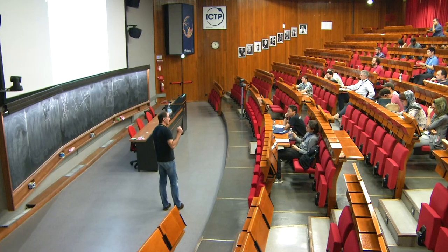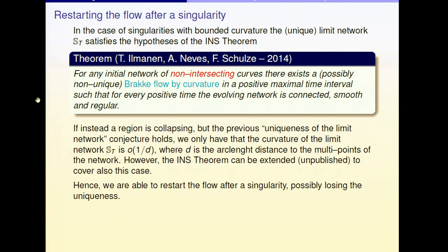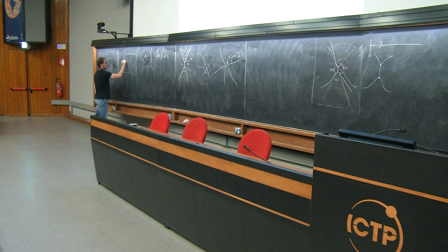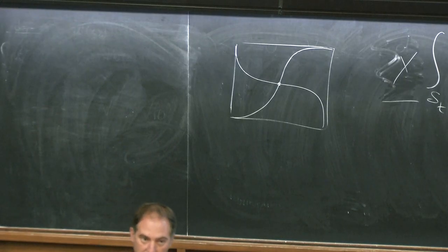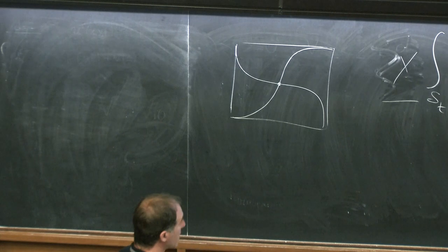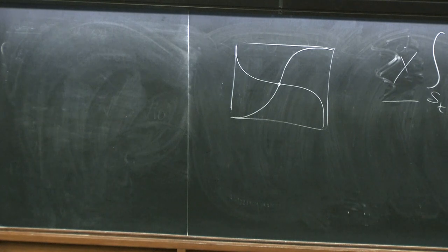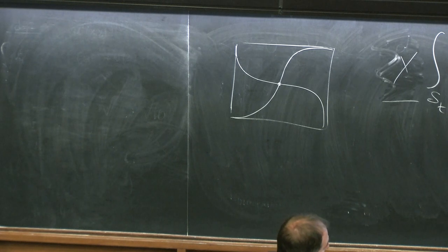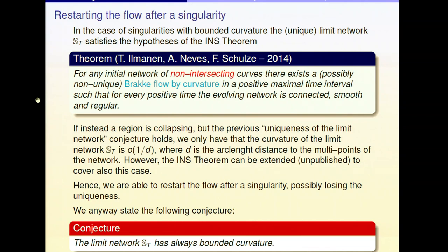As I said, possibly losing uniqueness. You remember my first example — by symmetry reasons, if you have an evolution, the rotation of your evolution is still another evolution. We hope that uniqueness could hold at least for generic initial data without so many special symmetries. Even if you can extend the theorem and cover this case, we can conjecture with good evidence that also in this case the curvature of the limit network is bounded — not the curvature along the flow converging to the network S(t), but the curvature of what you find at the end. So all these curves actually have bounded curvature.